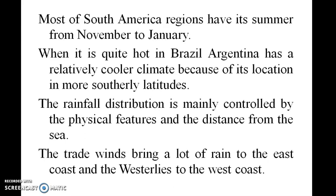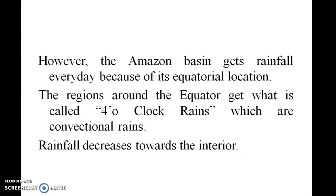When it is quite hot in Brazil, Argentina has a relatively colder climate because of its location in more southern latitudes. However, the Amazon basin gets rainfall every day because of its equatorial location. The region around the equator gets what is called four o'clock rain, which is convectional rain. Rainfall decreases towards the interior.